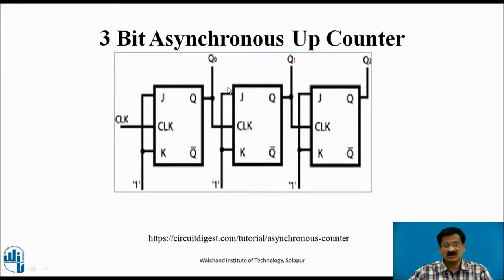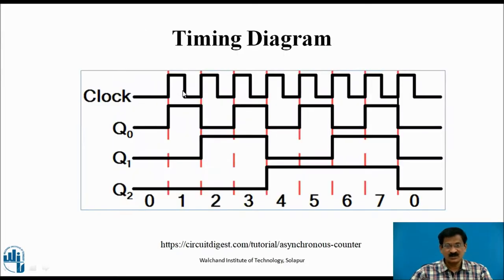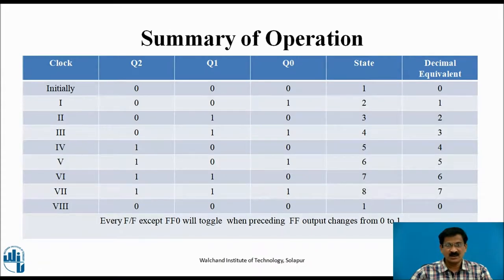The counter proceeds through 1,0,1 then 1,1,0 and finally 1,1,1. After the maximum count 1,1,1, it resets to 0,0,0 at the next clock pulse. In the timing diagram, Q0 changes at every clock transition, Q1 toggles only when Q0 changes from 1 to 0, and Q2 changes only when Q0 and Q1 both change from 1 to 0. The full sequence runs from 0,0,0 to 1,1,1 and resets after the 8th clock pulse.